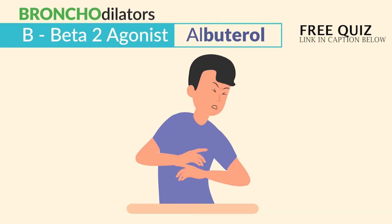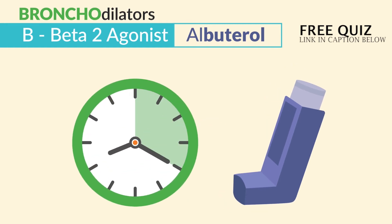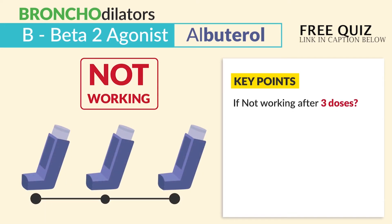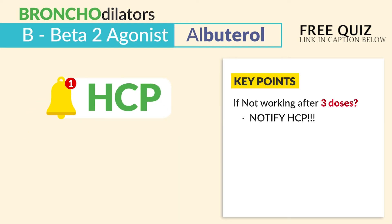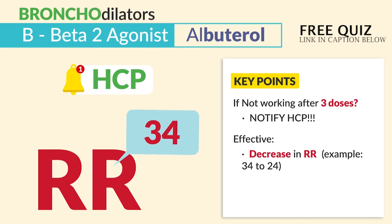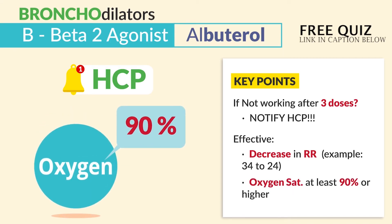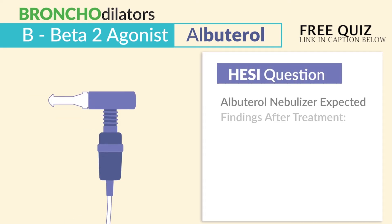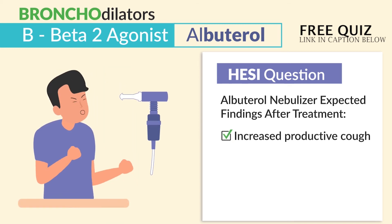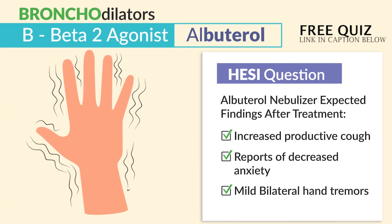During a severe asthma attack, instruct patients to take 2–4 puffs every 20 minutes for 3 rounds. Key point: if it doesn't work after 3 doses, notify the HCP. To evaluate if the medication is effective, look for a decrease in respiratory rate — for example, 34 respirations going down to 24 — and oxygen saturation at least 90% or higher. A common HESI question asks about expected findings after albuterol nebulizer treatment: there will be increased productive cough, reports of decreased anxiety, and mild bilateral hand tremors — these are totally normal.